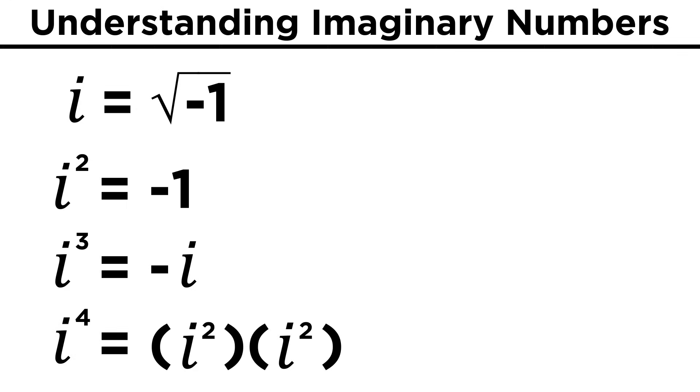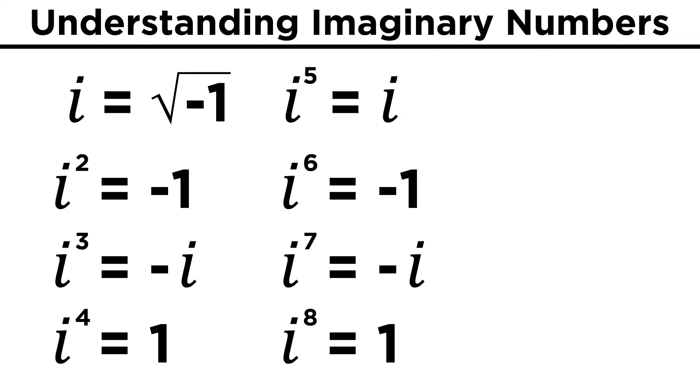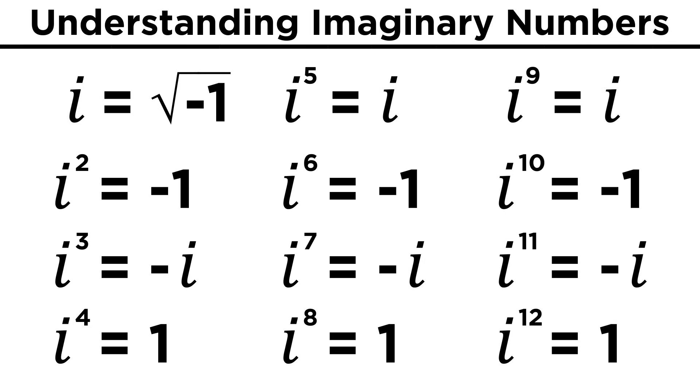i to the fourth is i squared times i squared, or negative one times negative one, which is one. This series of four values repeats every four powers of i, so i to the fifth through eighth will be these values once more, and then we start again.